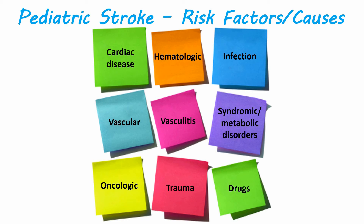For risk factors and causes associated with stroke, cardiac disease is the most common, with one-third contributing to ischemic stroke. Sickle cell disease would be an example of hematologic issues. Infections, both common and rare, including parvovirus, varicella, meningitis, and even cat scratch fever could be a possibility. It could also involve an arteriovenous malformation, Marfan syndrome, or homocystinuria.